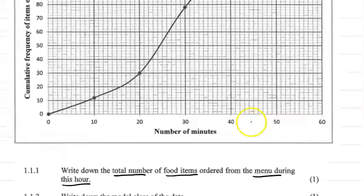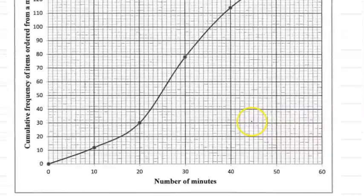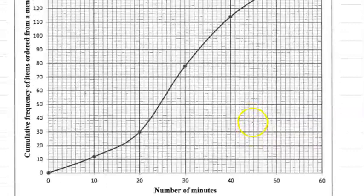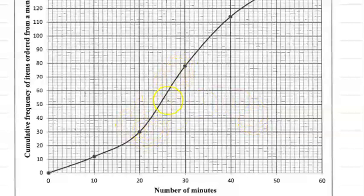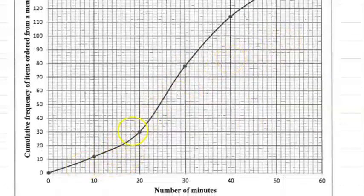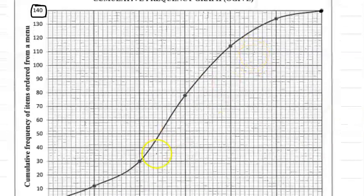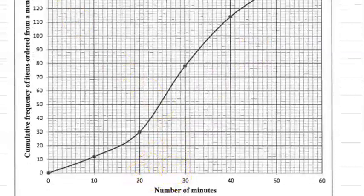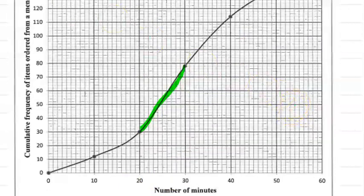The next question is: write down the modal class of the data. Modal means the frequency must be the highest for that particular class, so we're looking for the class with the highest frequency. The highest frequency would be the greatest distance between two dots on the curve. We can see that between 20 and 30 we have the greatest distance, meaning this interval has the highest frequency.